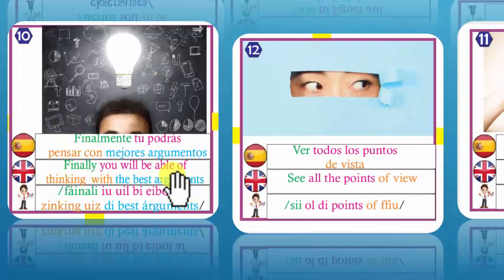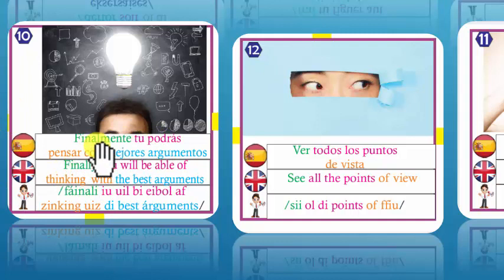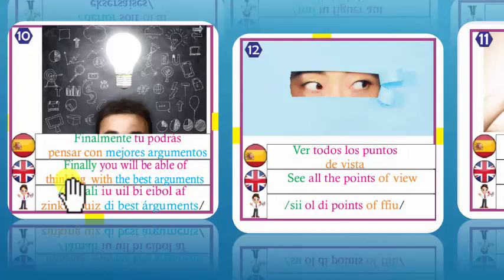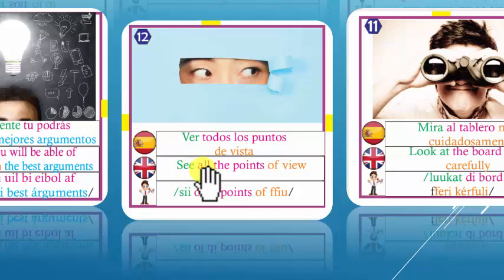Number 10: Finally you will be able of thinking with the best arguments. Tú podrás pensar con los mejores argumentos. Recuerda que la pronunciación la mejoras en la medida en que escuchas y repites. Finally — you — will — be able — of — thinking — with the best arguments.